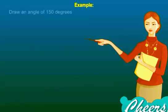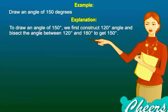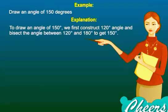Example: Draw an angle of 150 degrees. To draw an angle of 150 degrees, we first construct a 120 degrees angle and then bisect the angle between 120 and 180 degrees to get 150 degrees. Let us see the steps of construction.